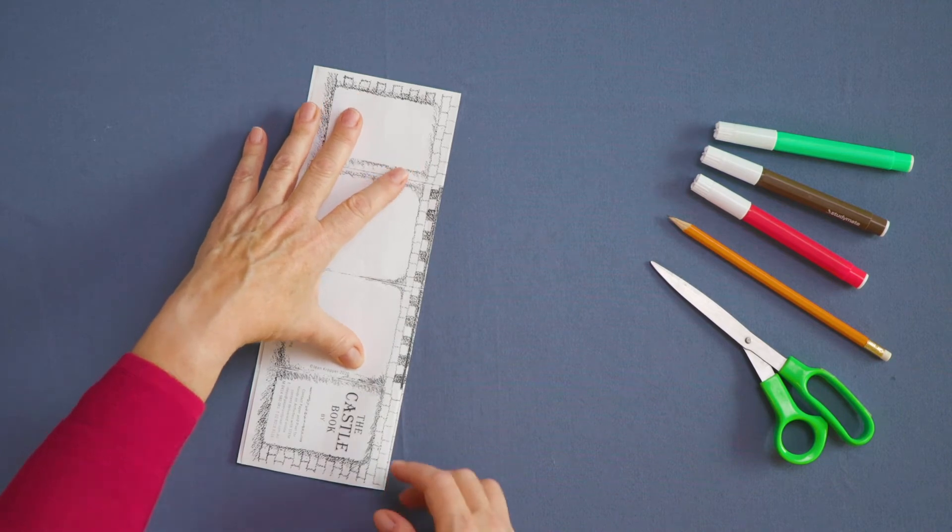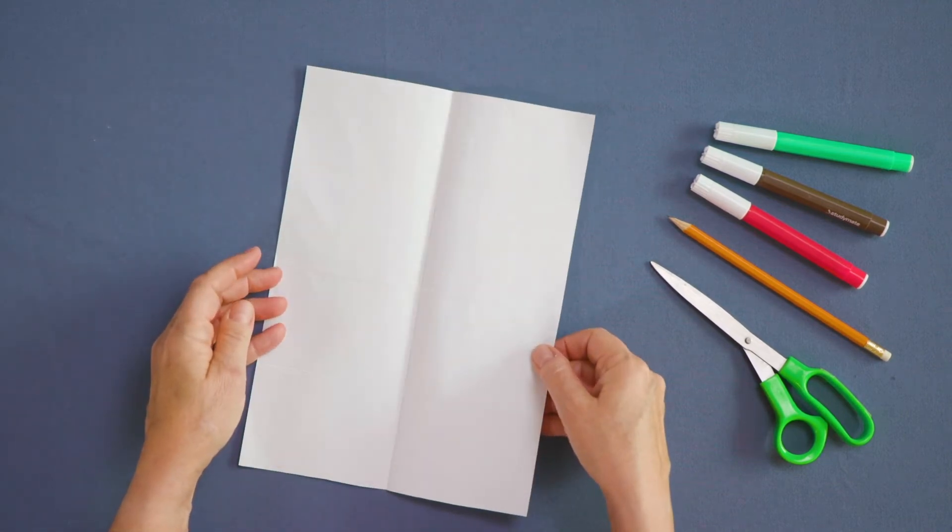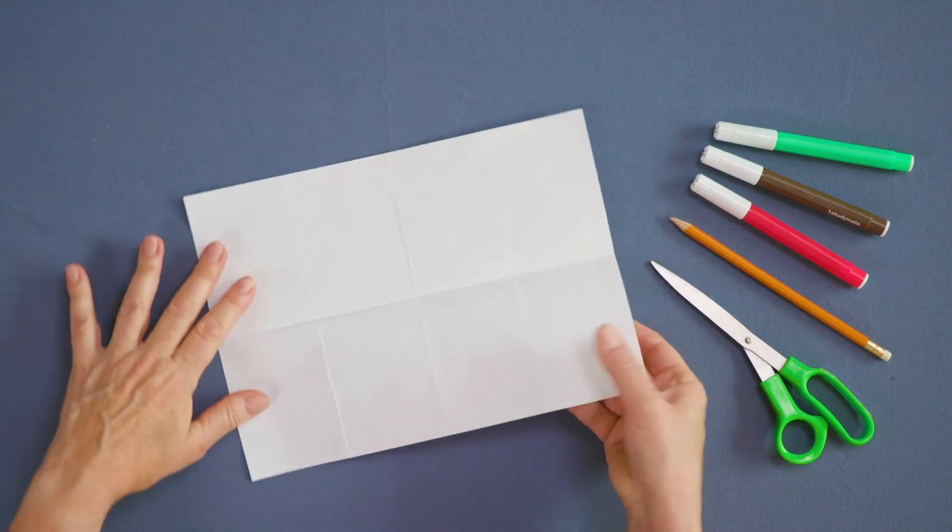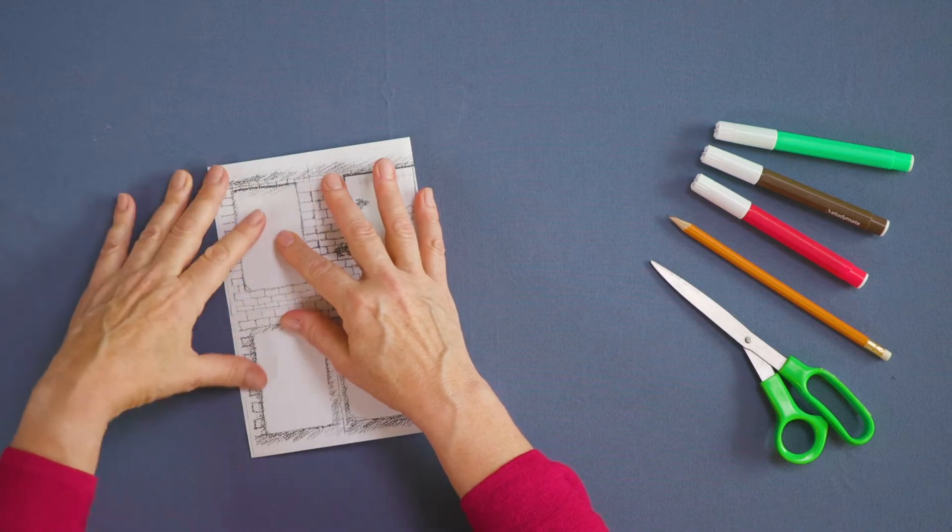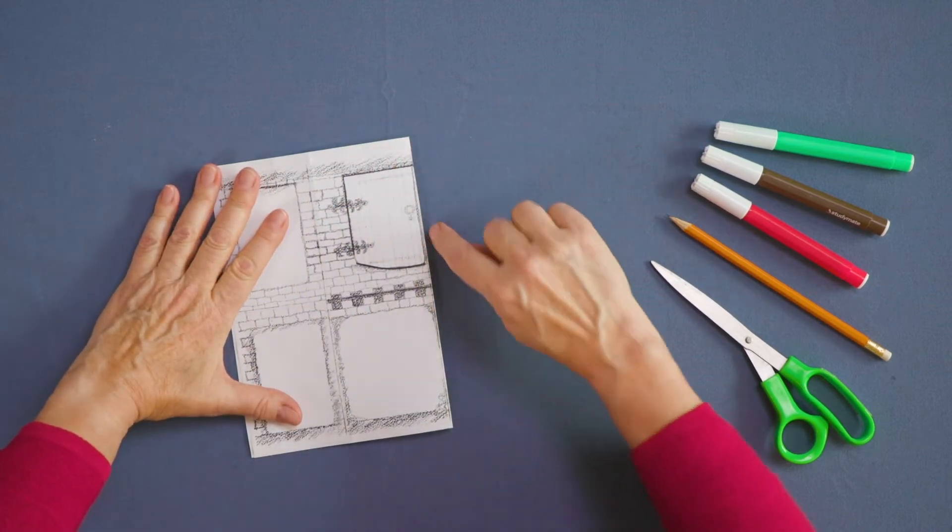Open the template out flat, blank side up. Fold the template in half short ways and match the corners. Check the fold is aligned with the center of the doors.